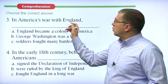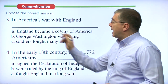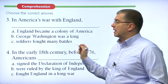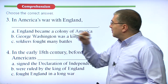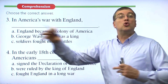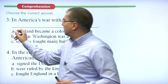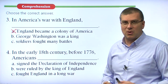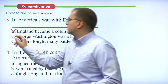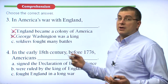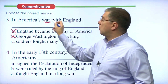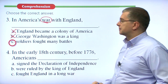Number three: In America's war with England — A. England became a colony of America; B. George Washington was a king; C. Soldiers fought many battles. Option A is wrong — America didn't take over England. Option B is wrong — George Washington was not a king. Option C is correct: soldiers fought many battles. That happens in all wars, not just America's war with England. The answer is C.